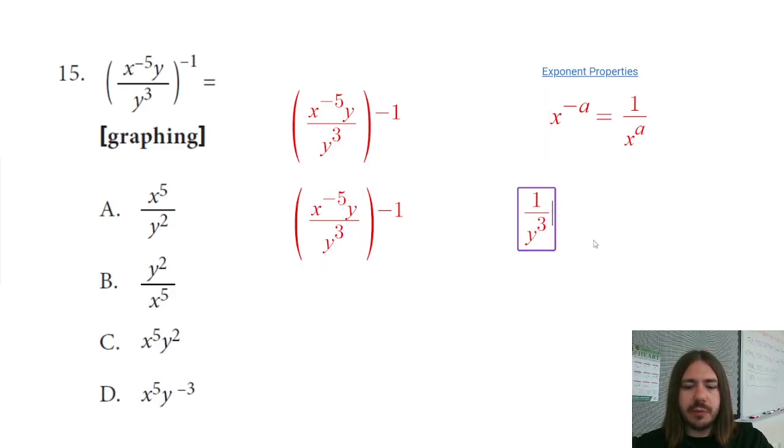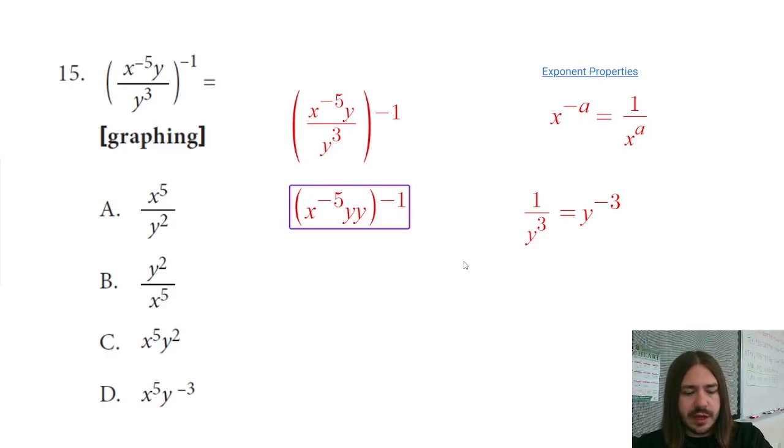And so if I use this exponent property, that means I can rewrite this as y to the negative third. And so what I'm going to do is just rewrite this, and instead of having this divided by y cubed, I'm going to multiply by y to the negative three.